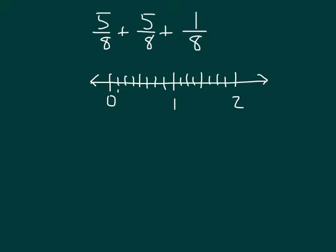I'll label some of these: 1 eighth, 2 eighths, 3 eighths, 4 eighths, 5 eighths, 6 eighths, 7 eighths, 8 eighths or 1. Then 9 eighths would be 1 and 1 eighth, 10 eighths would be 1 and 2 eighths, 11 eighths, and 12 eighths which is 1 and 4 eighths.